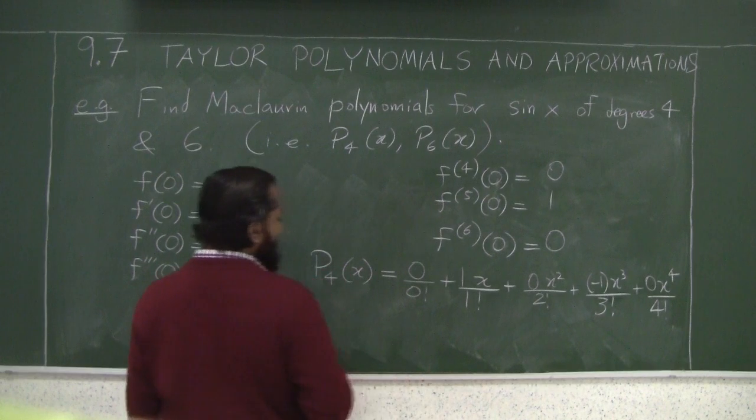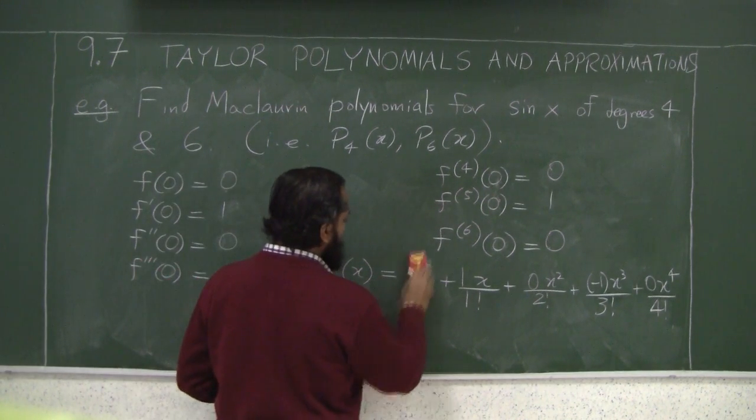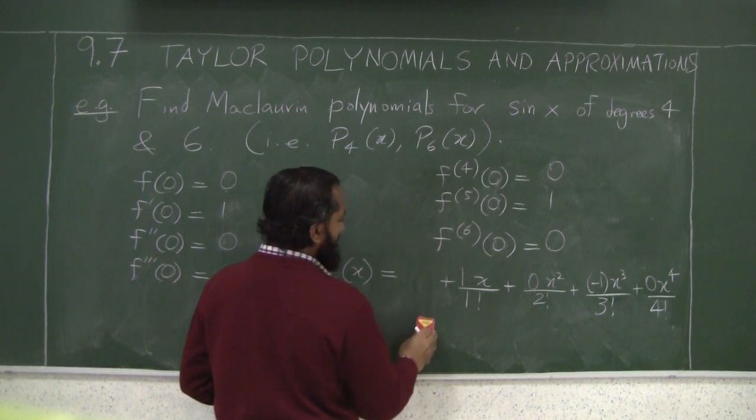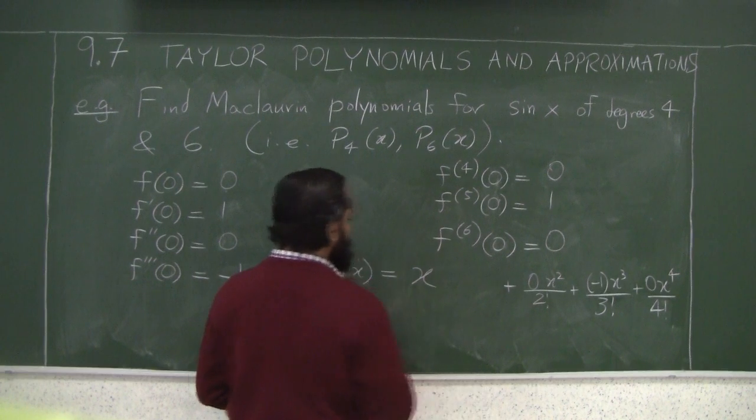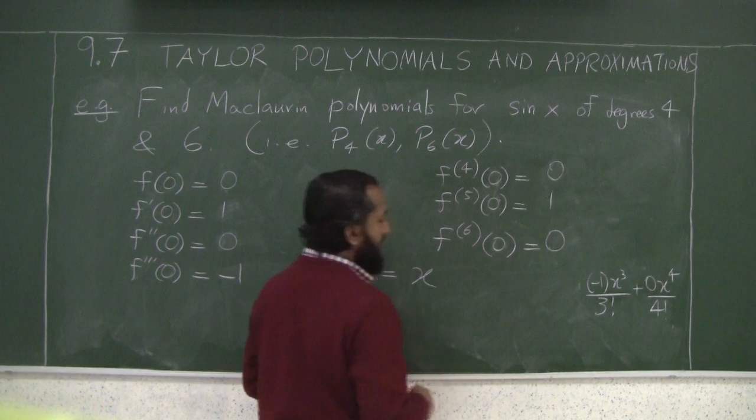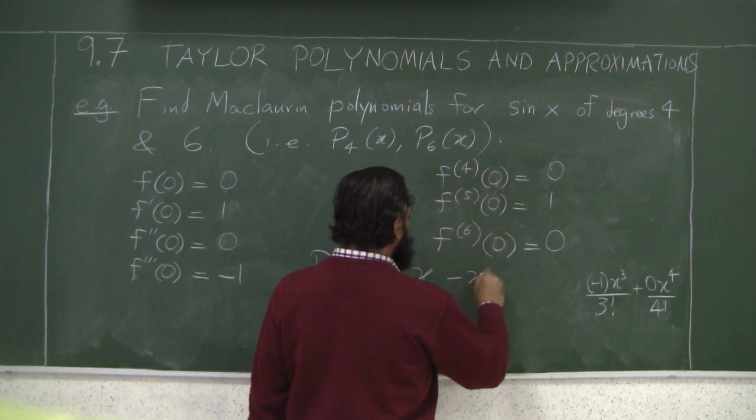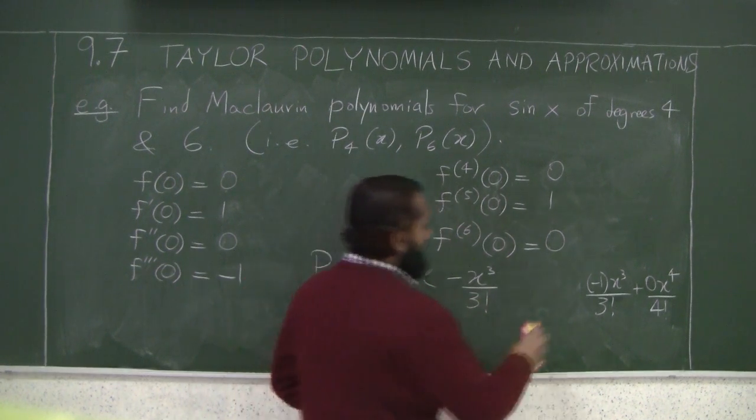Let's simplify this thing. The zeros give you nothing, this gives you x, again the next term is 0 again, then you have minus x cubed over 3 factorial, then you have 0 again.